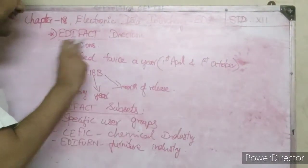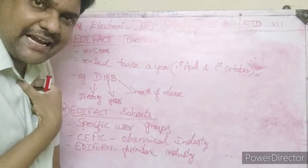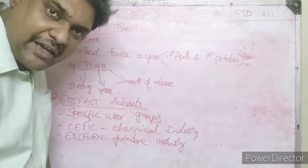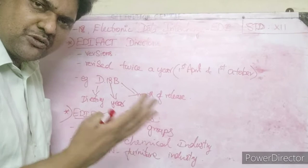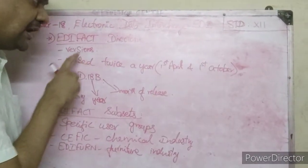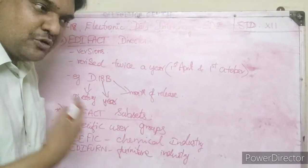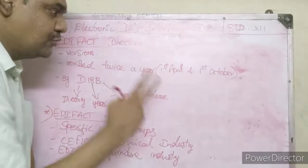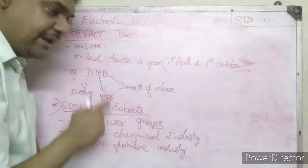Now we will see the next topic: EDI Directories. Directories are nothing but versions of EDIFACT. Just like Android has new versions every year, or Windows has versions like Windows 8, Windows 10, Windows 2000, EDI standards are also revised. New versions are released twice a year — on 1st April and 1st October. For example, a version name would be D.18B.